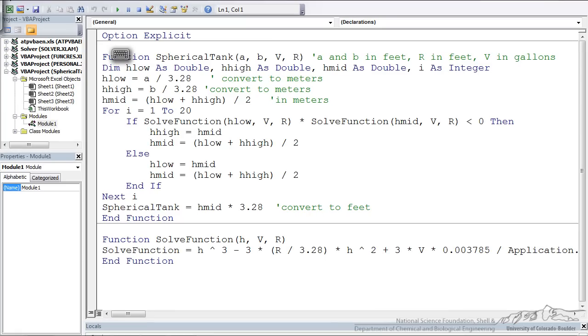What you see here, I've named this function spherical tank. And I've got A, B, V, and R as inputs. And I just put some comments here. And comments you can denote with an apostrophe. A and B are in feet. R is in feet. And V is in gallons. Which is, this is going to be pretty important.